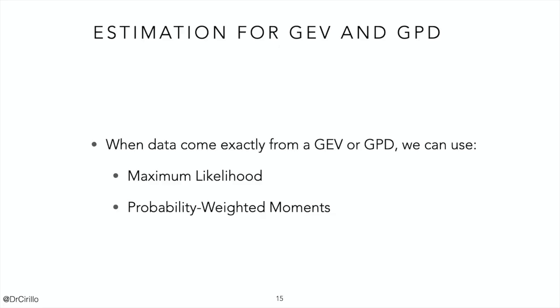After the diagnostic part covering all the different plots, an important next step is the estimation of the parameters of either the generalized extreme value distribution or the generalized Pareto distribution. For estimating the parameters of both distributions, there are different approaches. One can try to rely on maximum likelihood, which is a common way of estimating the parameters of a distribution in statistics.